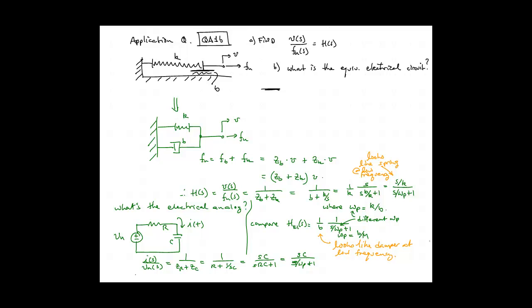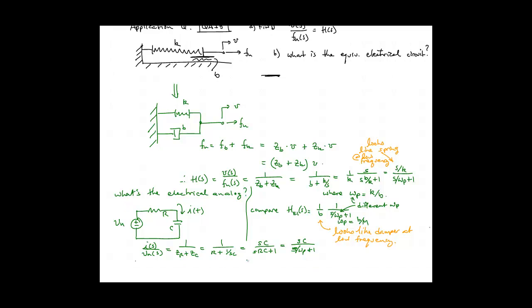We express the transfer function as effort over the flow, which results in 1 over the sum of the impedances. And we re-substitute R and 1 over SC for those impedances, multiply through by S times C, and we arrive at an analogous result, which is SC divided by 1 plus S over omega P. And here, omega P is 1 over RC, which is analogous to K over B for our mechanical system.